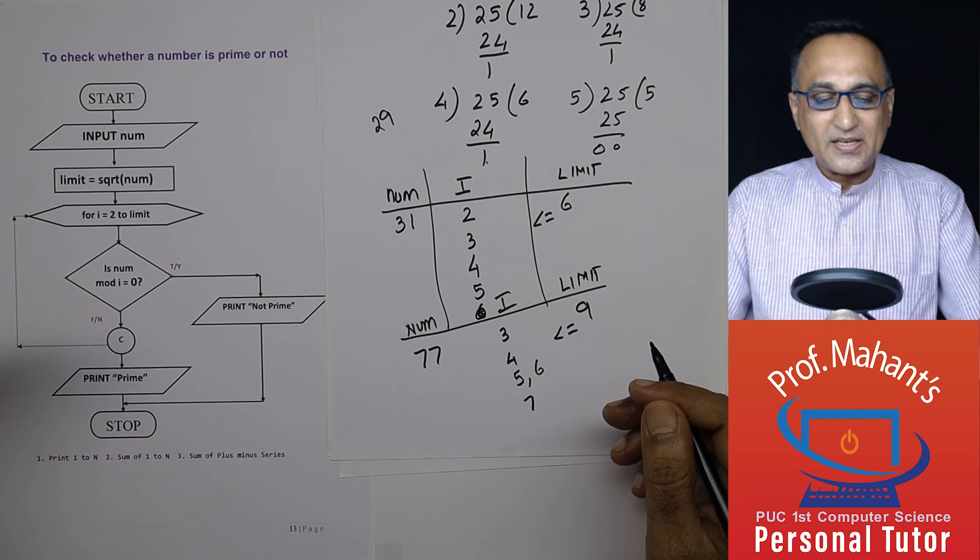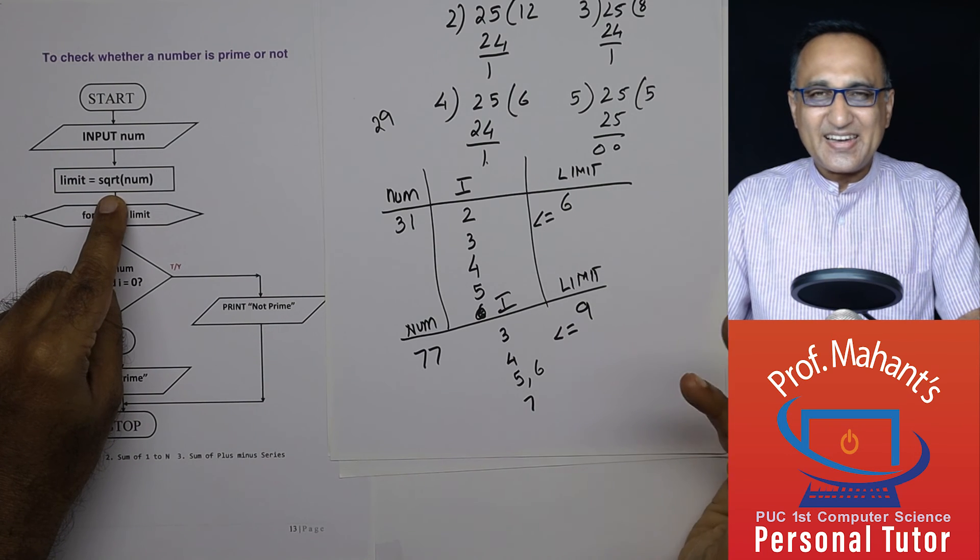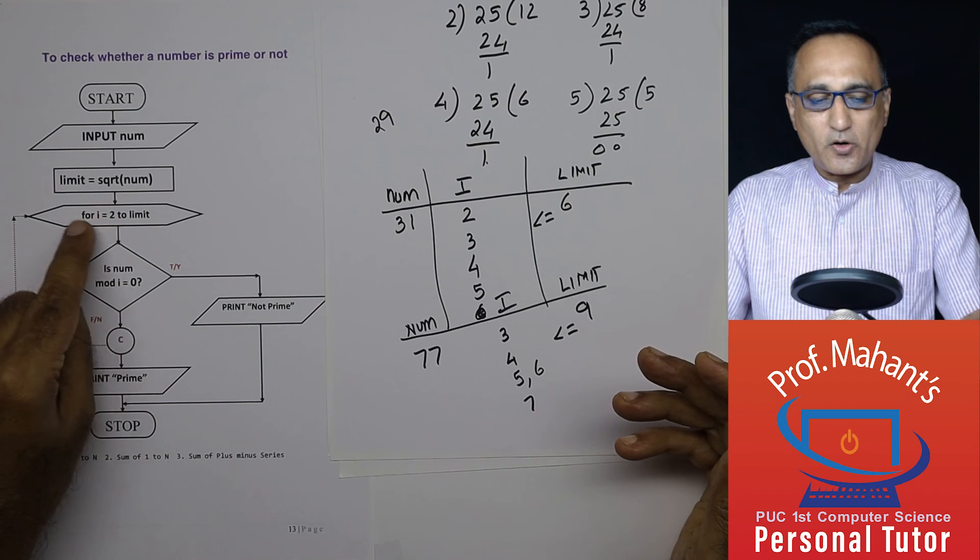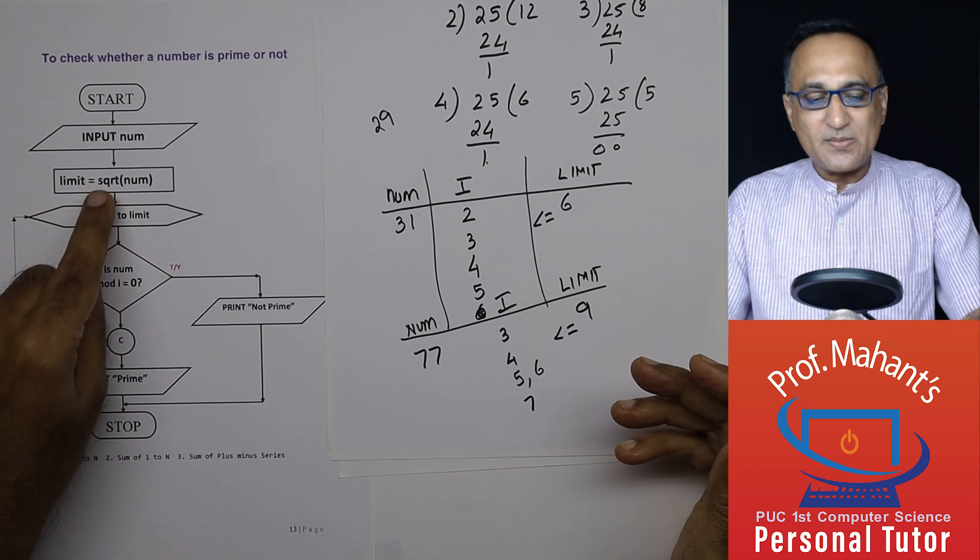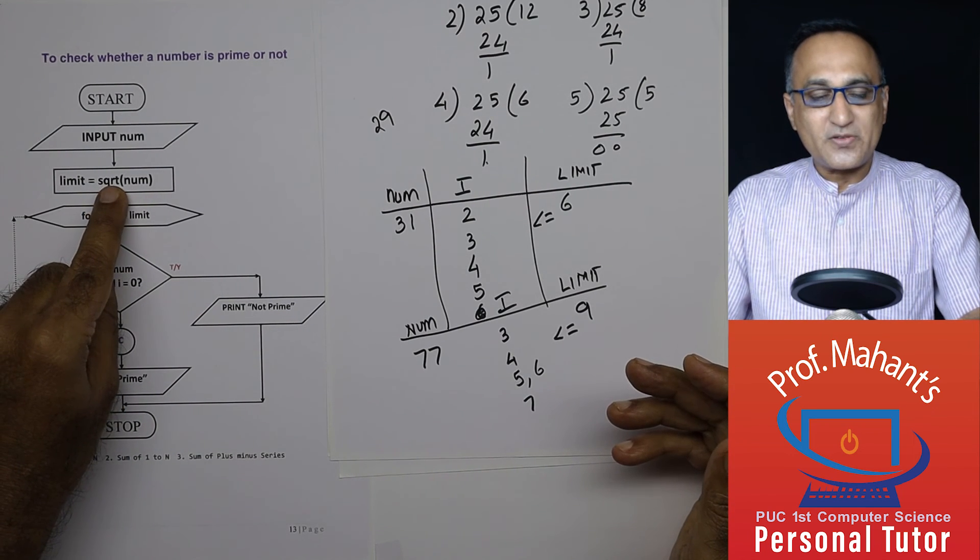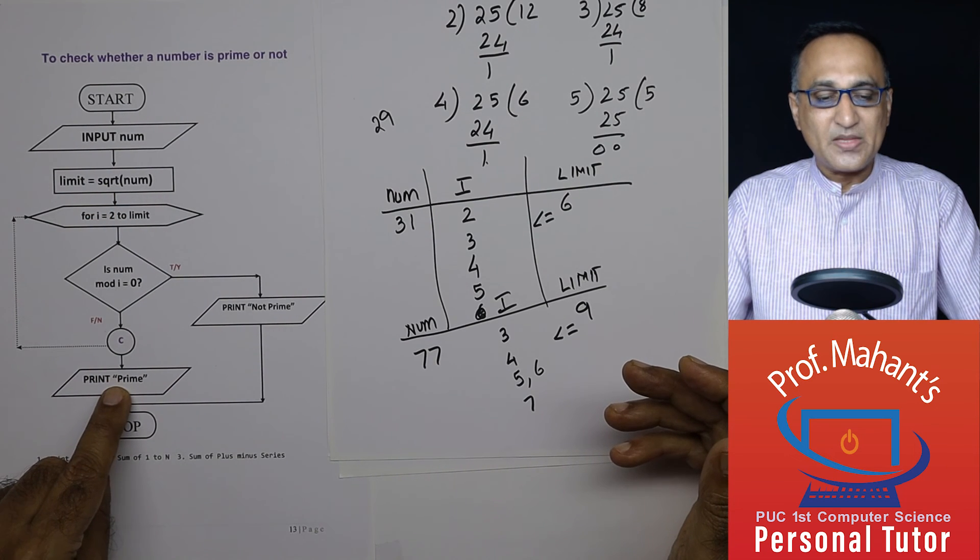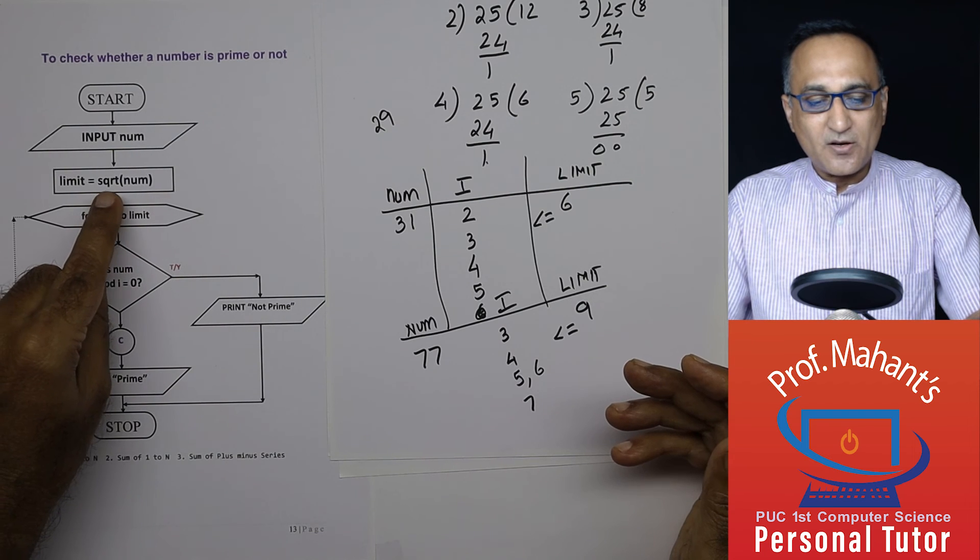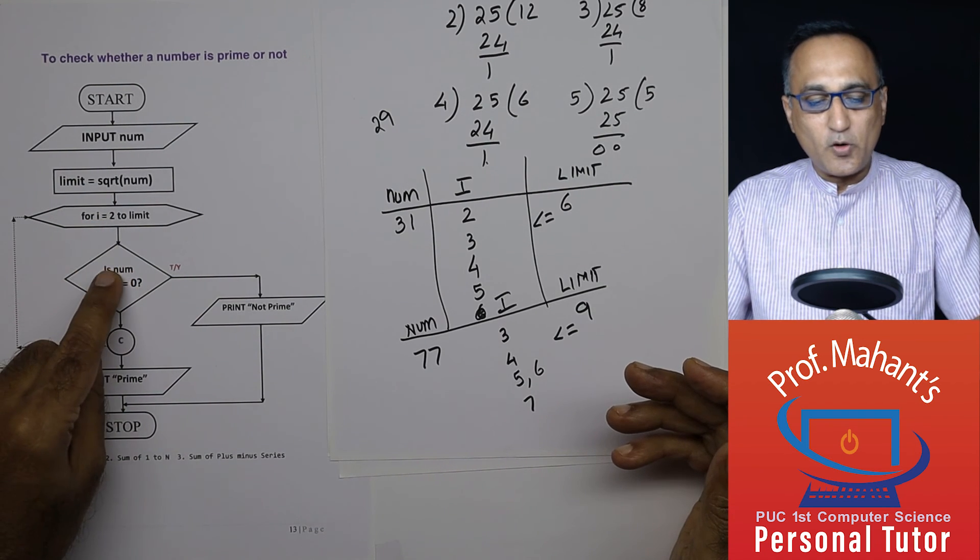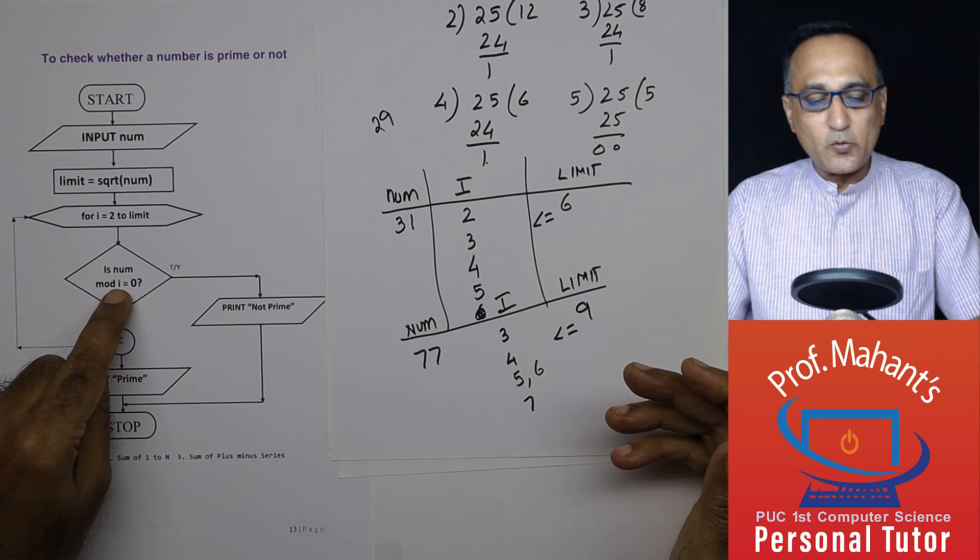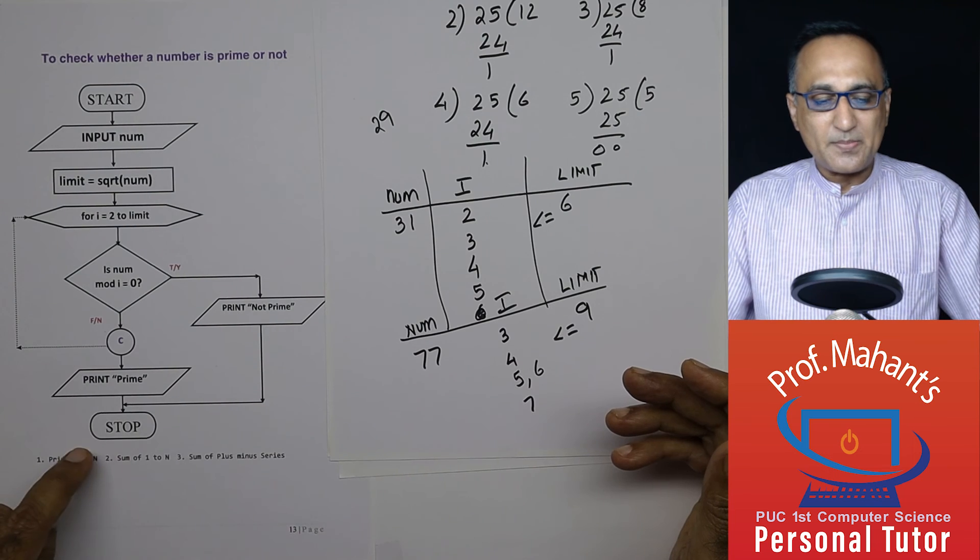Now if you take numbers like 2, 3, let's say we take 2, square root of 2 is less than 2. So it will not go in here. It will directly come here and say 2 is a prime. Similarly for 3, square root of 3 is less than 2. It will not go in here. It will directly come and say it is prime. Suppose I say 4. Square root of 4 is 2. So starting from 2 to 2, it will go 1. 4 divided by 2, remainder happens to be 0. So it will print 4 is not a prime and come here and stop.